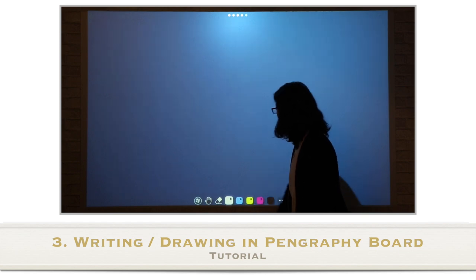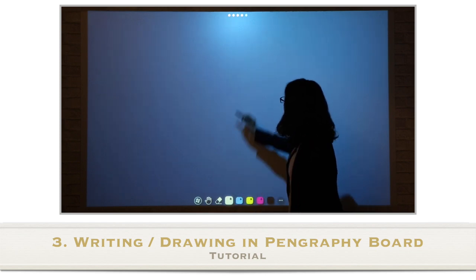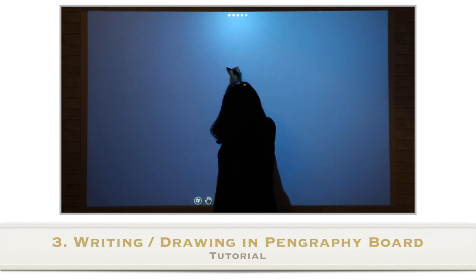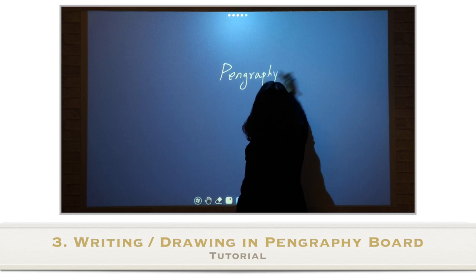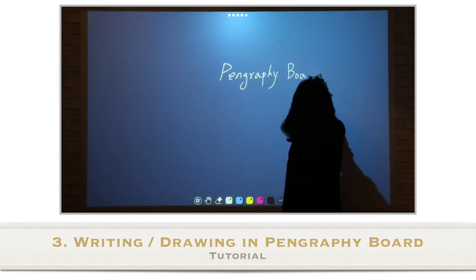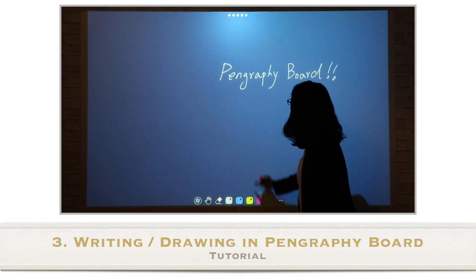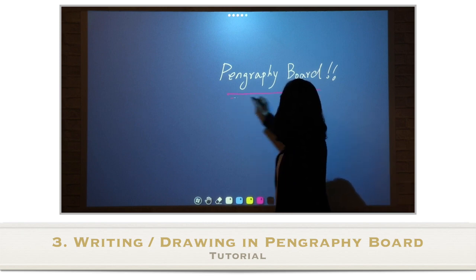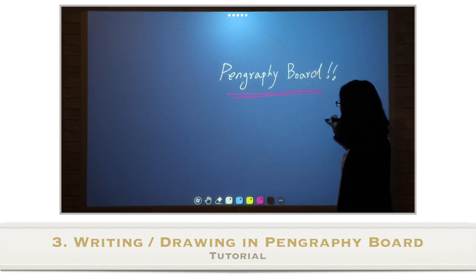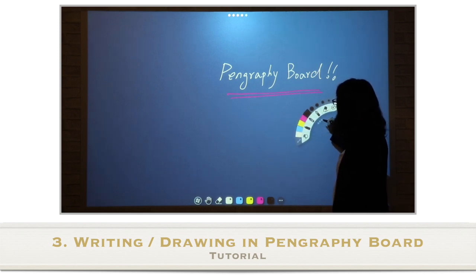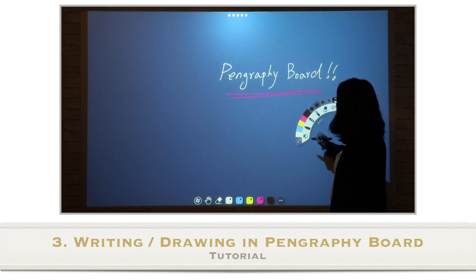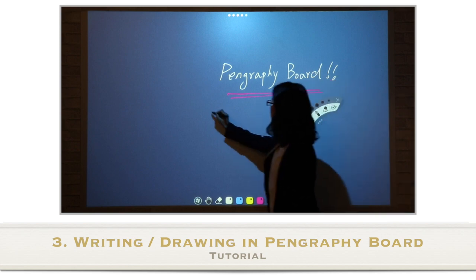You can select your pen color by touching the color icons. You can write anything with the color you selected. You can also generate a floating menu by pressing the area you want to use for at least one second. In the floating menu, you can choose the type and thickness of the pen. For example, fountain pen is a good fit for writing Chinese characters.